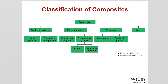In summary, composites can be particle reinforced (large particle or dispersion strengthened), fiber reinforced (continuous aligned fibers, or discontinuous short fibers which can be aligned or randomly oriented), structural (laminates and sandwich panels), or nano composites. All of these variations affect the final properties. Remember that dispersed phase orientation and distribution affect the properties.